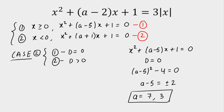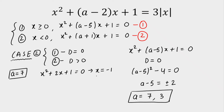Let's check A equals 7. For A equals 7, the first equation becomes X squared plus 2X plus 1 equals 0, which is a perfect square. So X equals minus 1. But I assumed the first equation gives a positive root; here we got X equals minus 1. So A equals 7 is clearly rejected — there is no need to check the second equation.